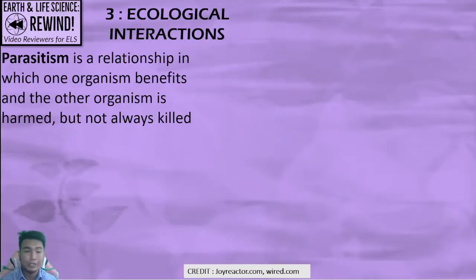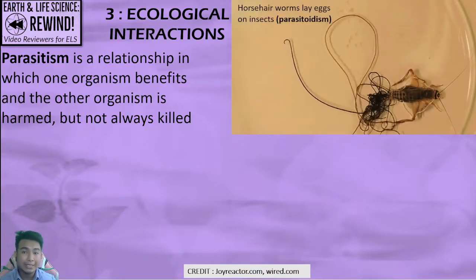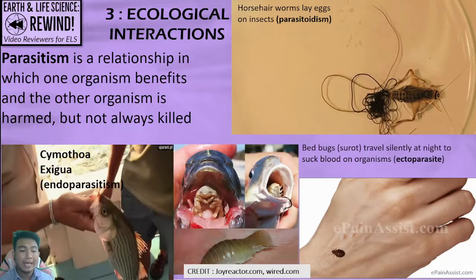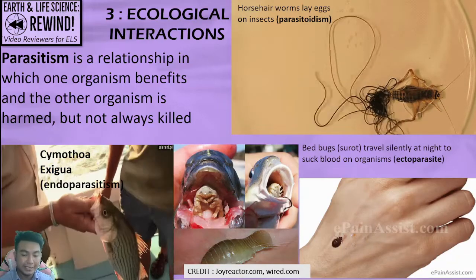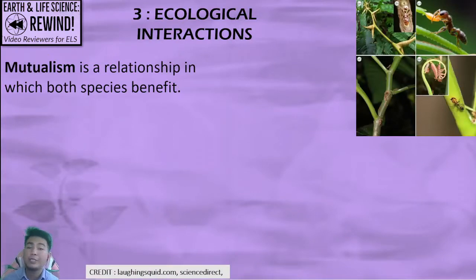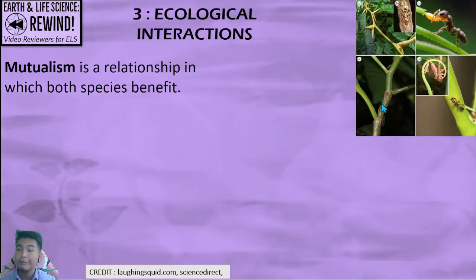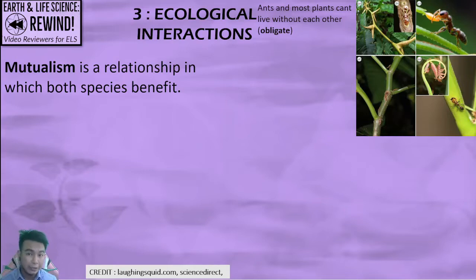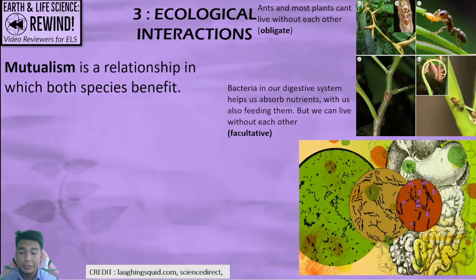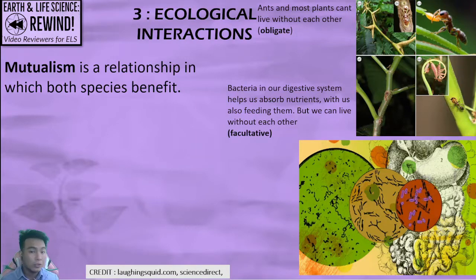Parasitism is a relationship in which one organism benefits and the other is harmed but not always killed. Parasites like worms, insects, and invasive organisms are part of parasitism. Mutualism is a relationship in which both species benefit. Plants benefit from ants and ants benefit from plants by transporting resources, and plants give ants territory and places to live. Bacteria in our gut help us digest and absorb nutrients while we feed them in return. Lichens with fungi also help each other nutritionally.